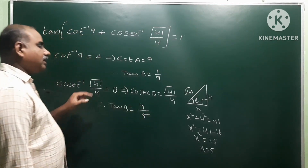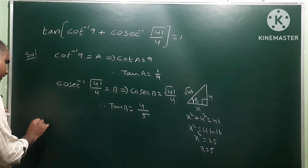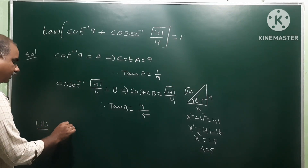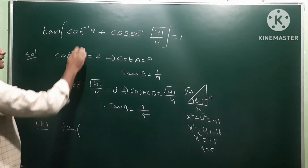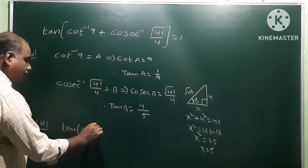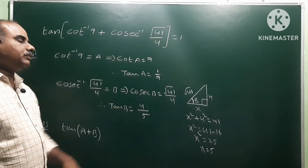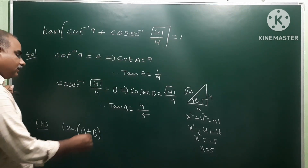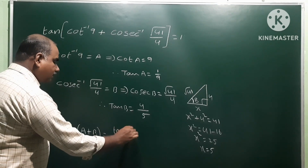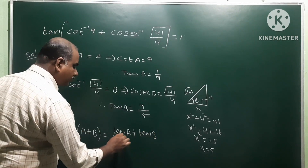So these are the values: tan(a) = 1/9 and tan(b) = 4/5. Now our LHS is tan(a + b), and we have to show that tan(a + b) = 1. Now write the formula: tan(a + b) = (tan a + tan b) / (1 - tan a · tan b).